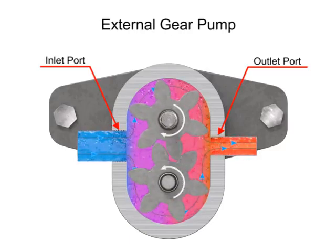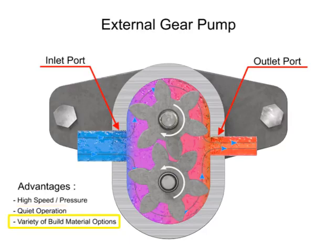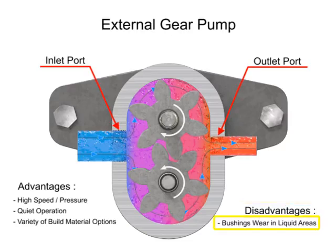The advantages of external gear pumps are their high speed and pressure, relatively quiet operation, and that their design accommodates a wide variety of materials. Disadvantages include bushings in the liquid area can become worn and that they have fixed end clearances.